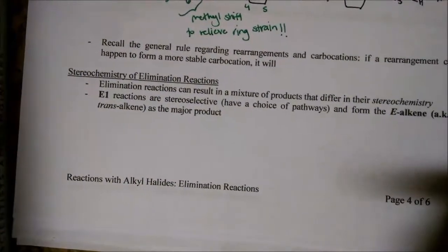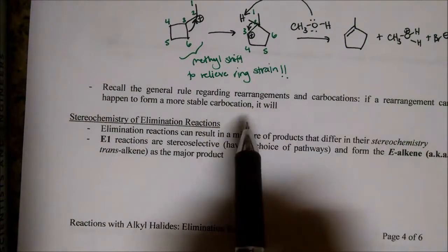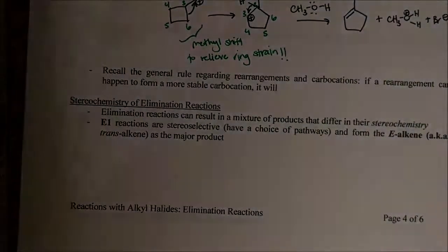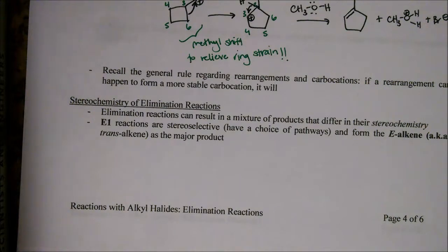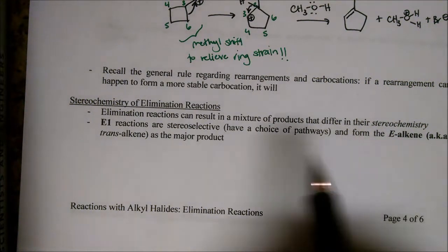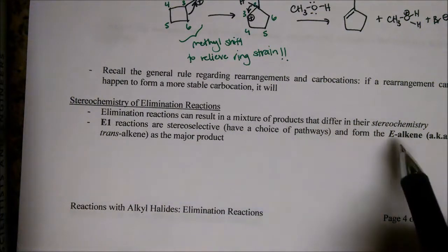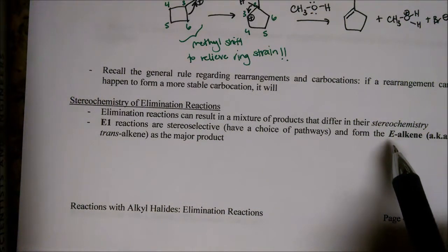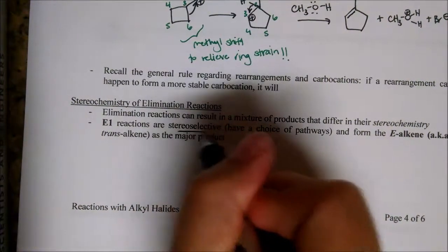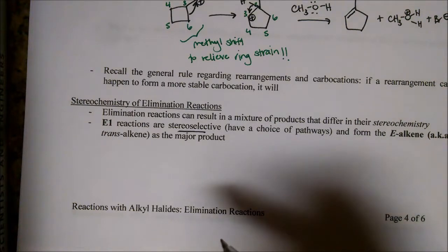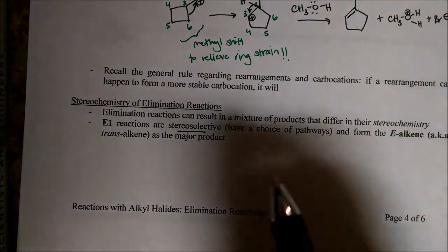Remember the general rule: if a rearrangement can occur, it will - so be on the lookout. Now, stereochemistry is another important topic. We can have cis or trans alkenes, and in elimination that's what we're talking about - not R or S, but E or Z, or cis or trans. E1 reactions are stereoselective. That's a buzzword meaning there's a choice of different pathways the mechanism could take, and from this choice we form the E alkene, which is the trans alkene, as the major product.